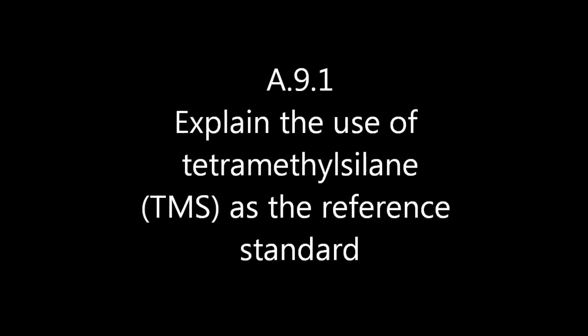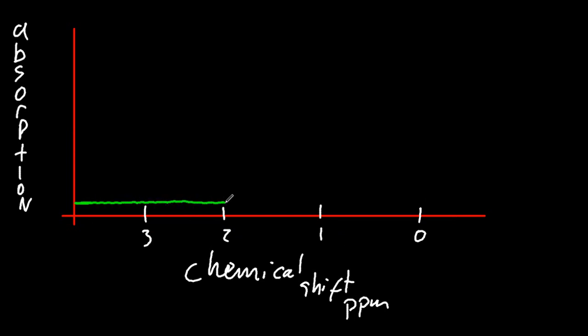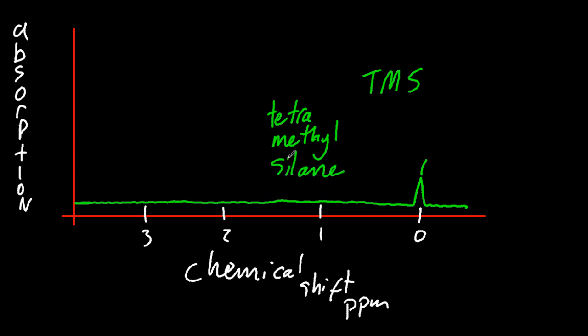TMS, which is tetramethylsilane. Well, for a higher level, when you look at a spectrum for the NMR, there'll probably be a little peak on the zero from the reference standard, which is TMS. So they put TMS into the sample, and then they tweak the NMR to try and line up the TMS peak with zero. And then you know everything else is going to work properly when it comes to the scale.